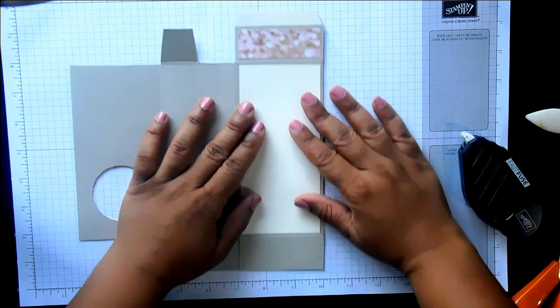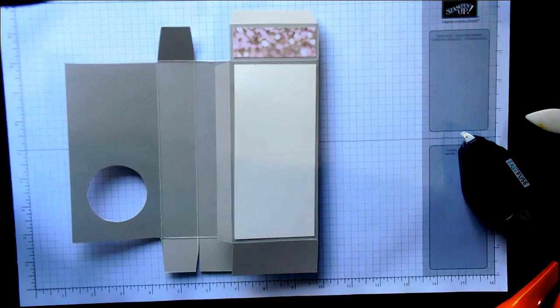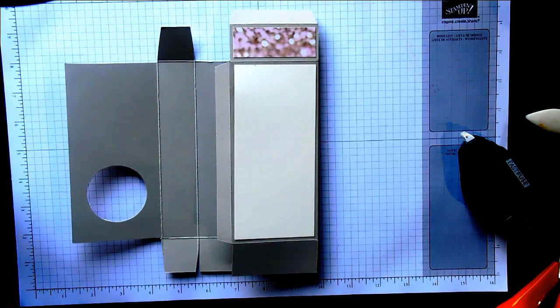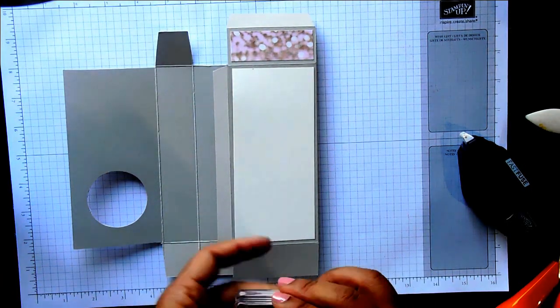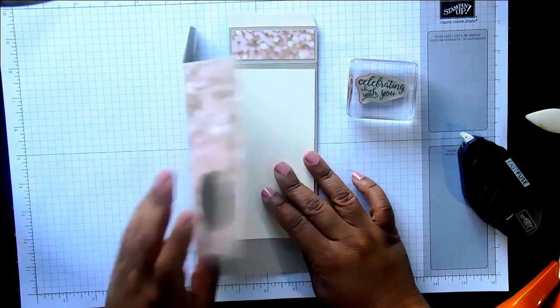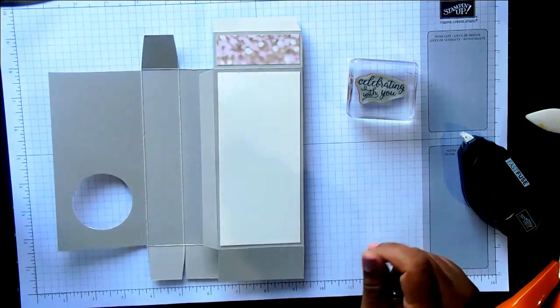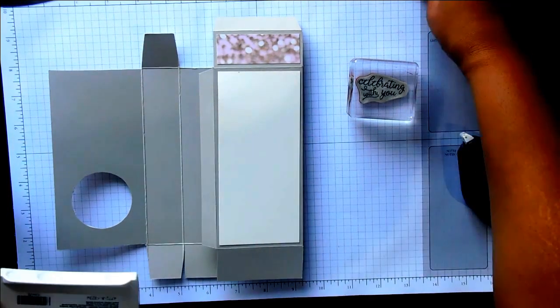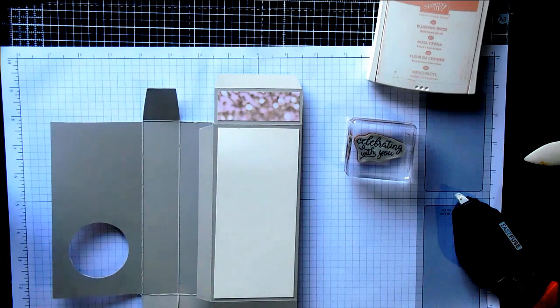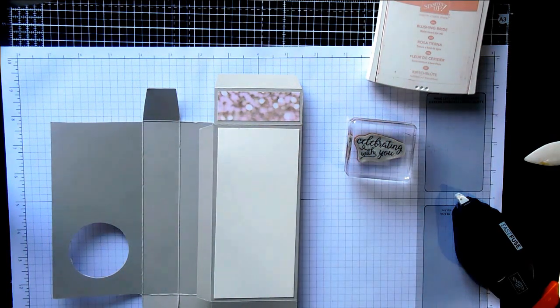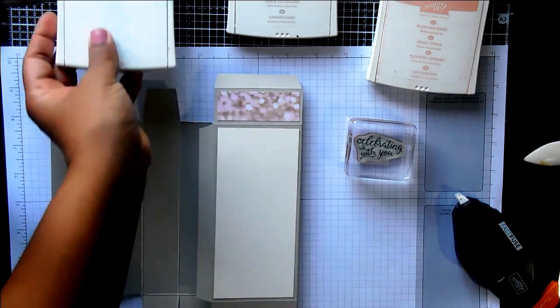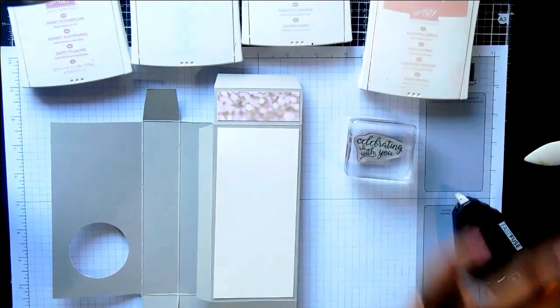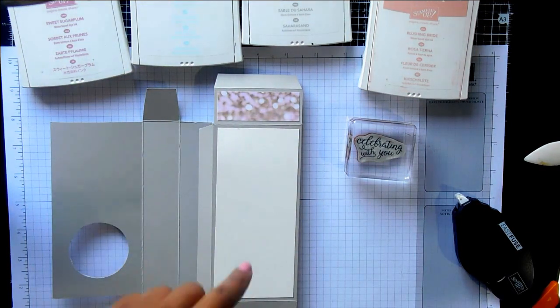So how this is going to go together is like this. So you're going to have your panel there. So this is going to stick onto here. Before I do that I want to do my stamping. But to make sure we get it in the right place because I want to see these words through the window. I'm going to stamp it before I finish putting the box together if that makes sense. So I'm just going to grab some inks. We've got Blushing Bride that coordinates with the paper. And Sahara Sand. And Soft Sky. And maybe a bit of Sweet Sugar Plum as well.